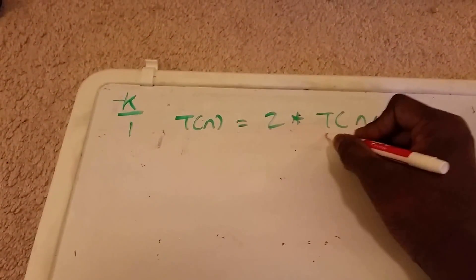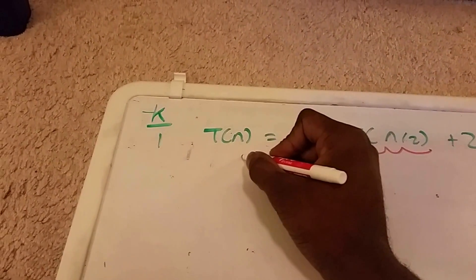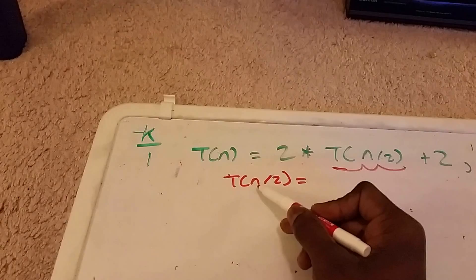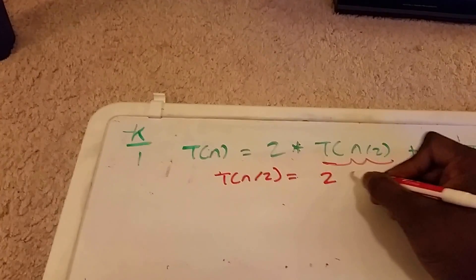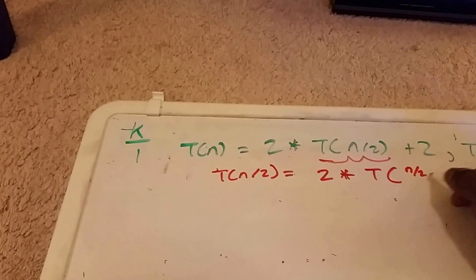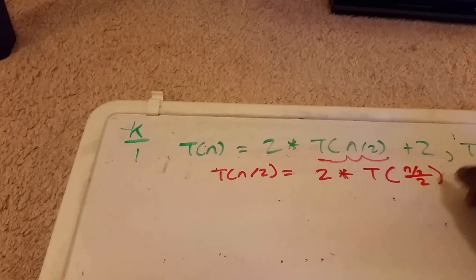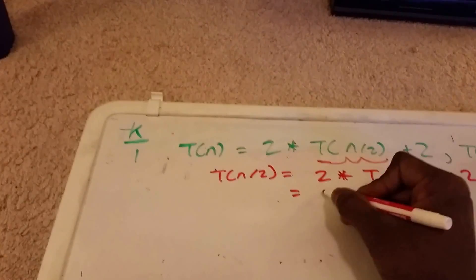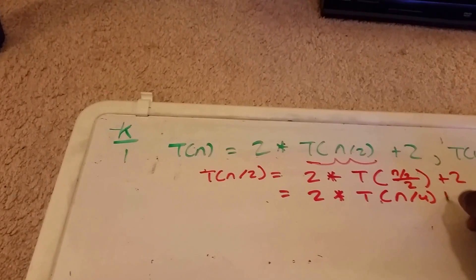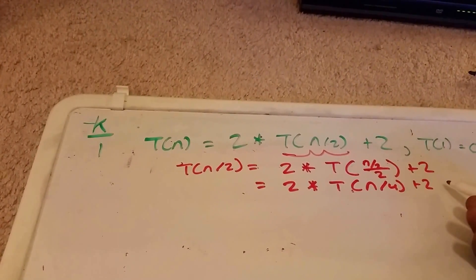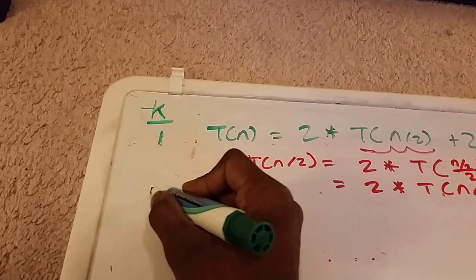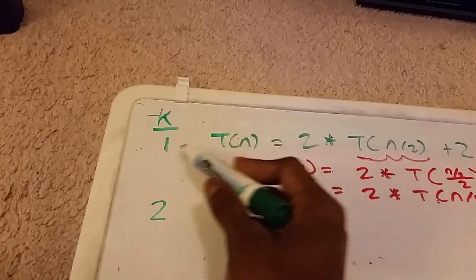To start off, we need to find out what T(N/2) is. Since we're substituting N/2 for N, that means this is N/2 divided by 2, plus 2 — so 2 times T(N/4) plus 2. This will be our second K iteration, and the original equation will be the first.